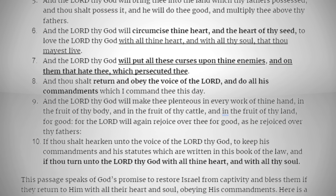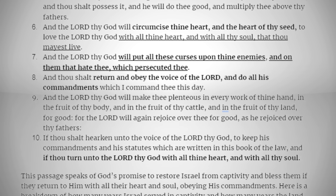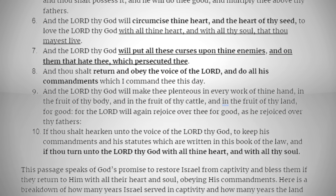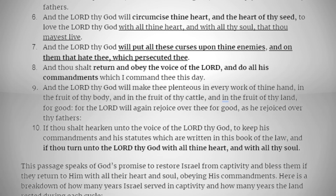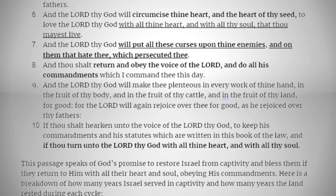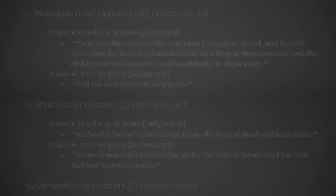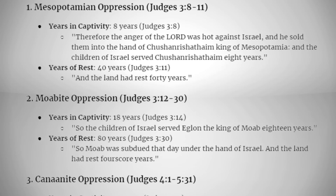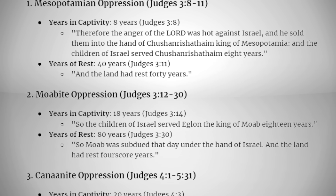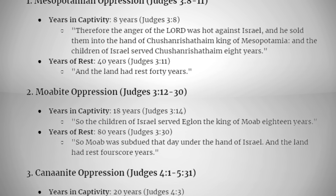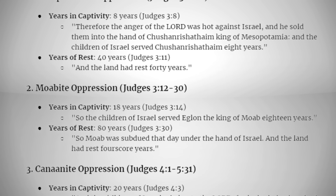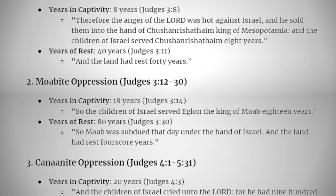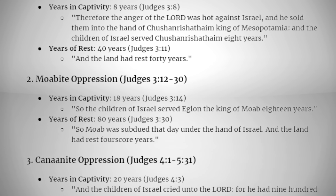Here is a breakdown of how many years Israel served in captivity and how many years the land rested during the era of the Judges. Mesopotamian oppression (Judges 3:8-11): years in captivity — 8 years. Judges 3:8 states: "Therefore the anger of the LORD was hot against Israel and he sold them into the hand of Chushan-Rishathaim king of Mesopotamia, and the children of Israel served Chushan-Rishathaim 8 years." Years of rest — 40 years. Judges 3:11: "And the land had rest 40 years."